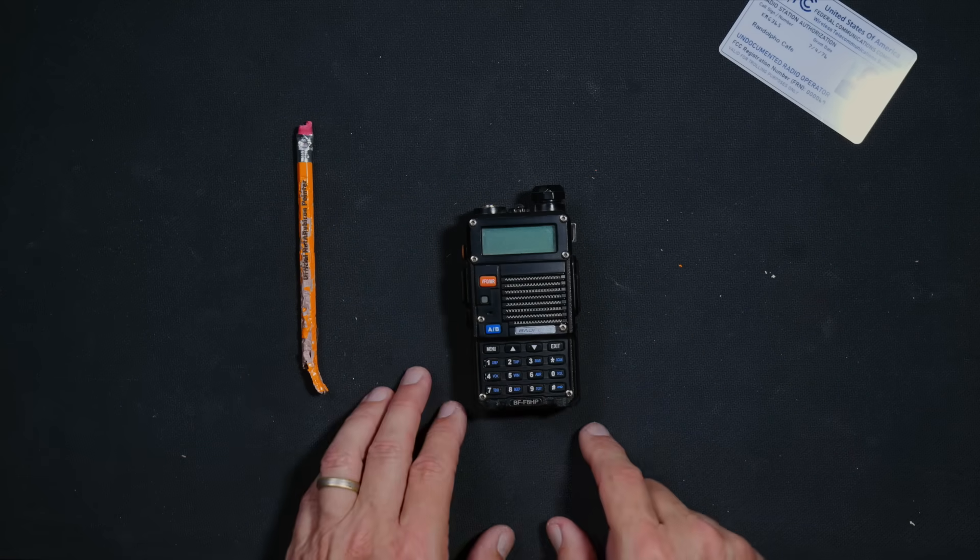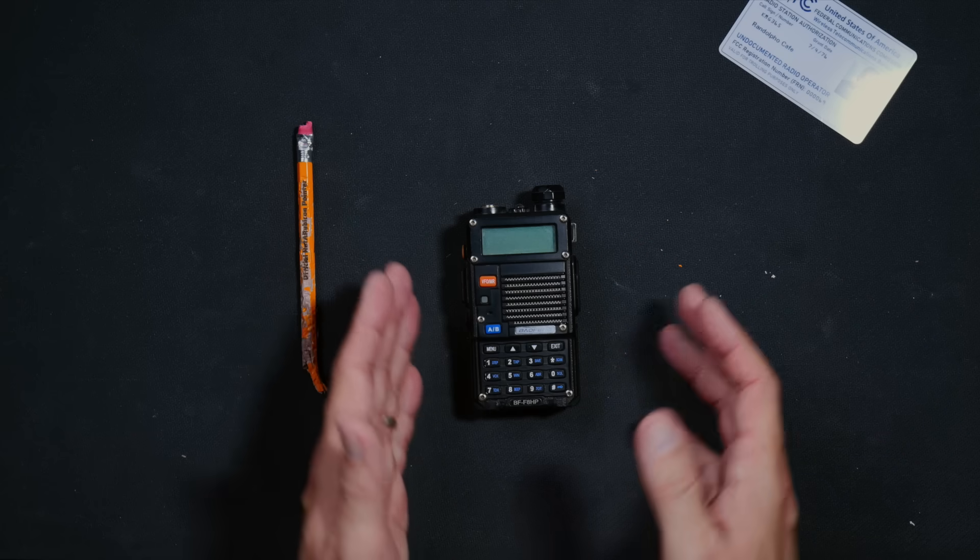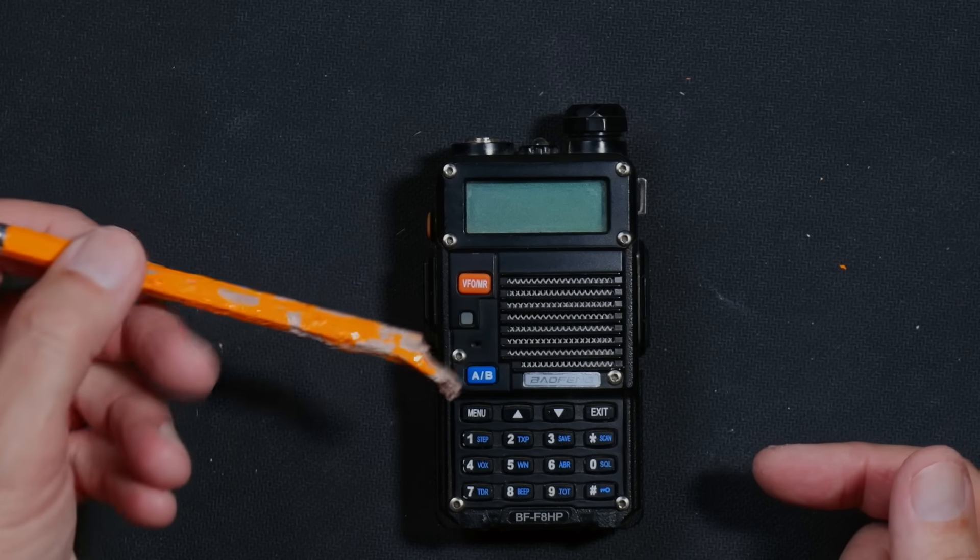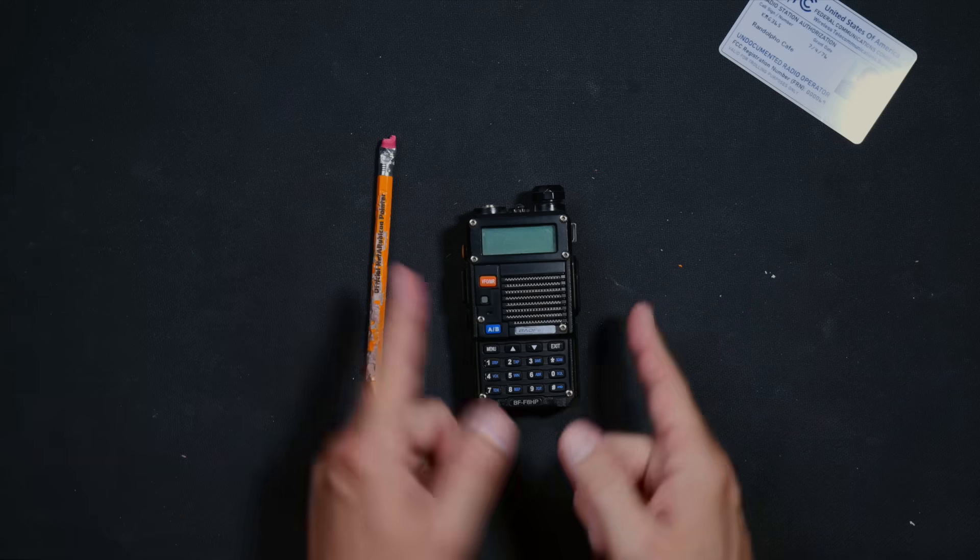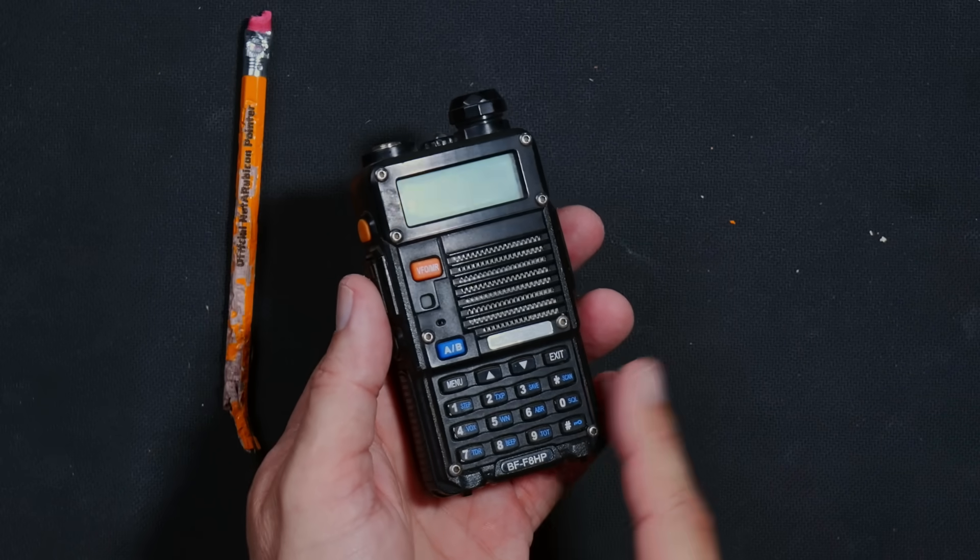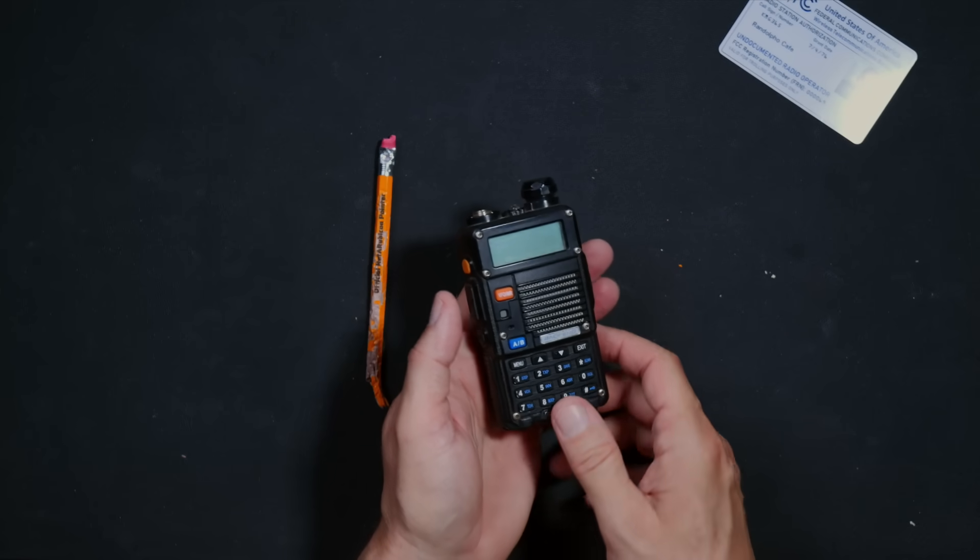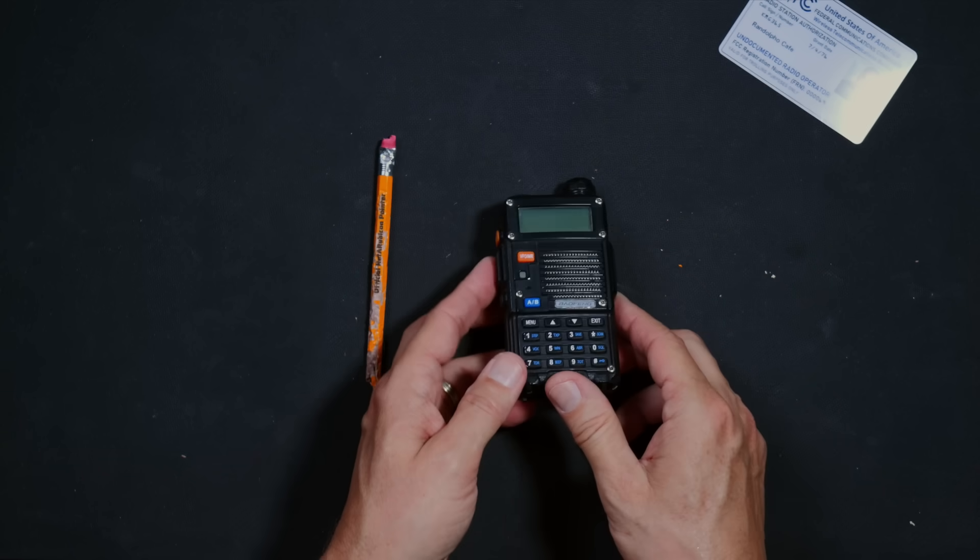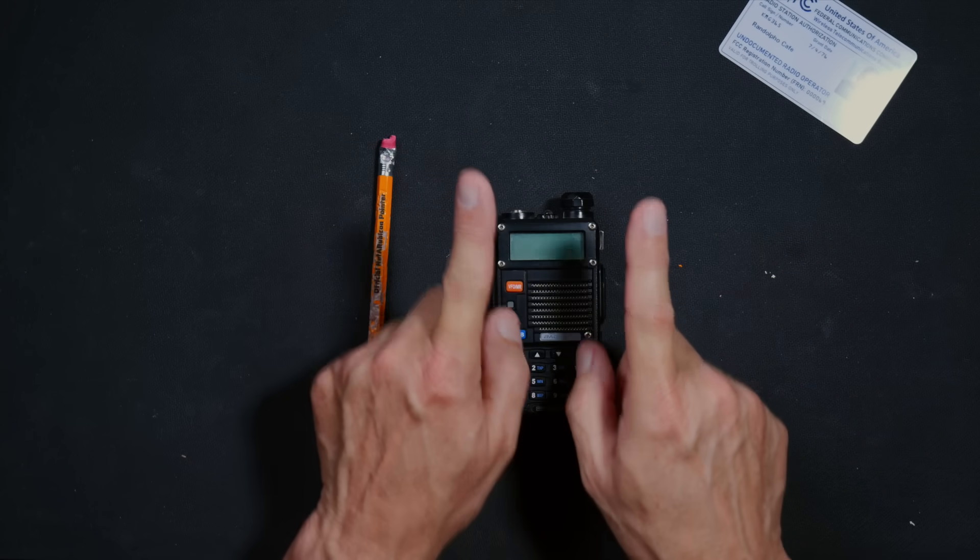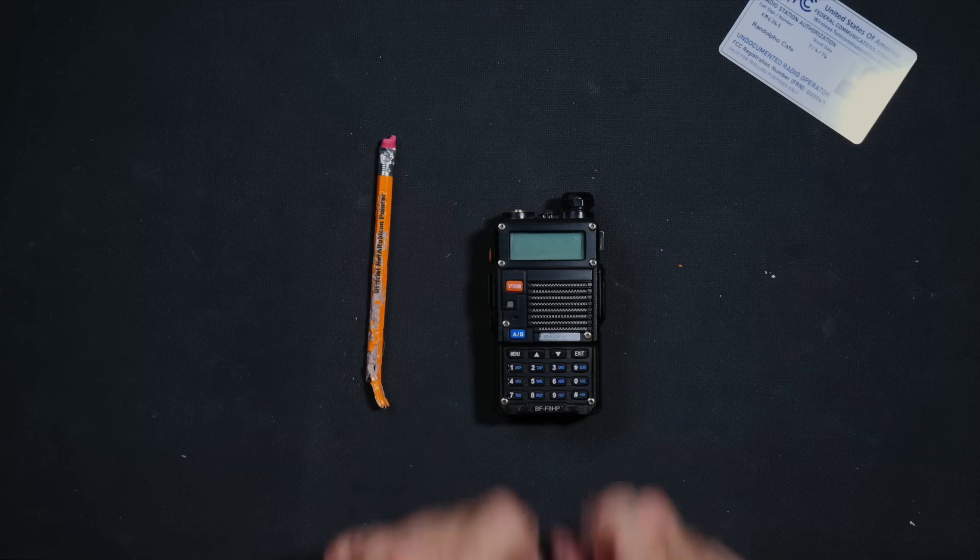Before we begin I must first point out a couple of issues that you may run into when trying to talk to other walkie-talkie radios with your Baofeng UV-5R or similar radio. First off your Baofeng UV-5R is a ham radio and the FCC has decreed that ye shall not use ham radios to talk with anything but other ham radios and only if you have an FCC permission slip for doing so.